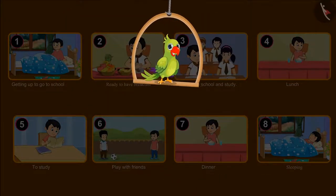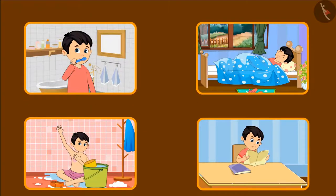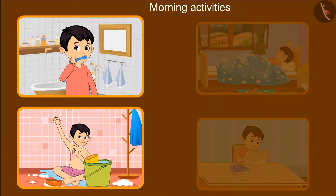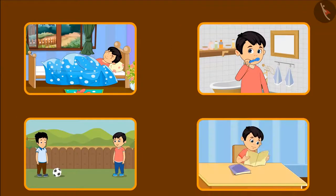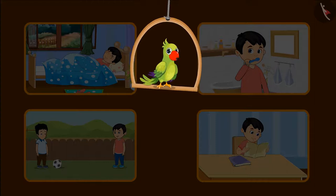So children, have you ever thought about your routine? Here are some activities that take place throughout the day. Children, can you tell which of these activities we do in the morning? Yes, in the morning we bathe and brush our teeth. And can you tell what we do in the evening? You are absolutely right, children — we play in the evening, and we also study. These are the activities that happen at different times throughout our day.